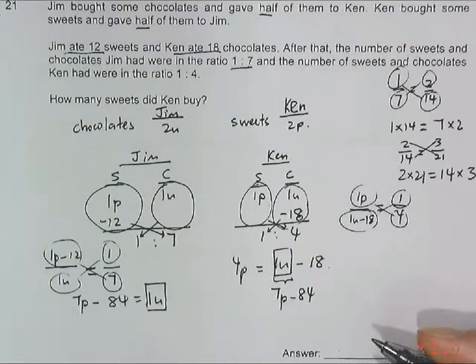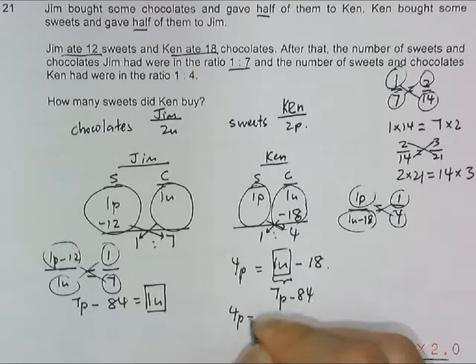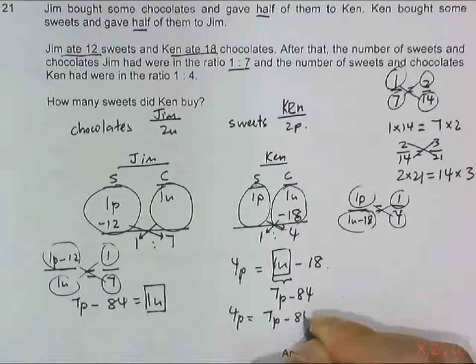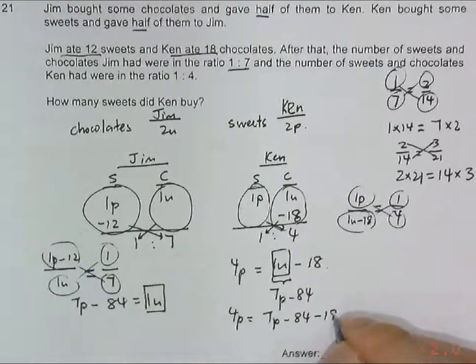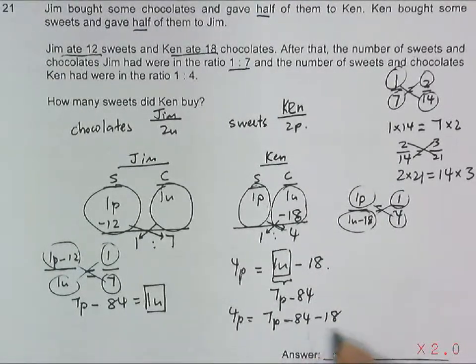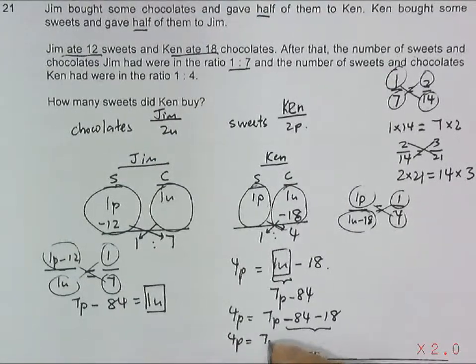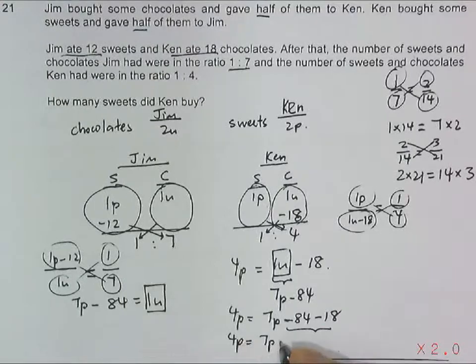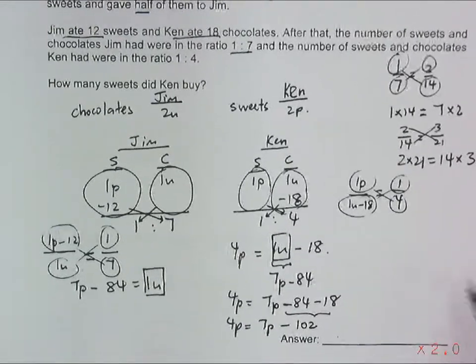I can solve this: 1 part. So 4 parts becomes 7 parts minus 84 - don't forget this minus 18, so a total of 102 is subtracted. You can write 4 parts equals to 7 parts minus 102. This easily gives us 3 parts as 102, so 1 part would be 34.